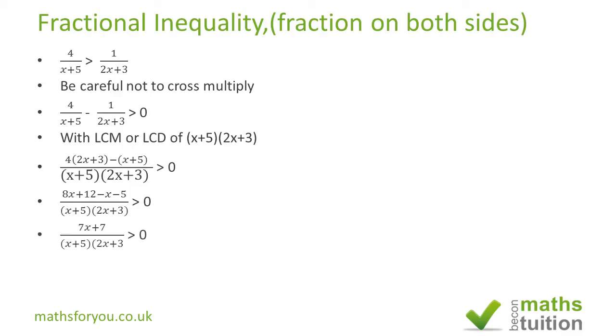And when you simplify we end up with 7x plus 7 divided by the denominator and factorizing the numerator we get 7 into (x+1) there divided by the denominators as we already got there.